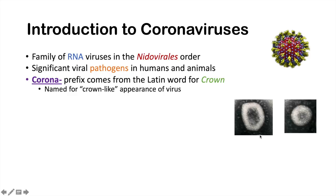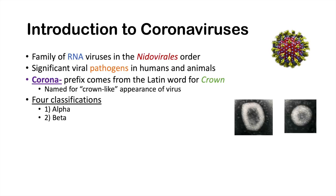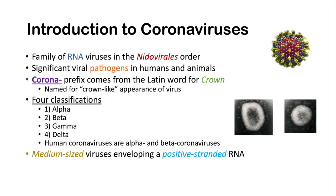There are four classifications of coronaviruses: alpha, beta, gamma, and delta. Human coronaviruses fall into the alpha and beta classifications — the coronaviruses we hear about are in those first two groups. Coronaviruses are medium-sized viruses that envelope a positive-stranded RNA, and they have the largest viral RNA genome known.